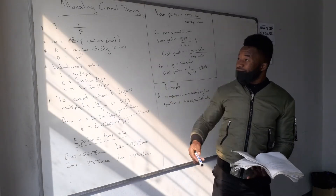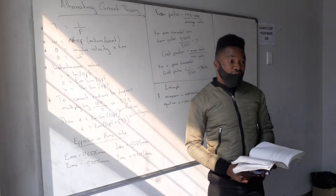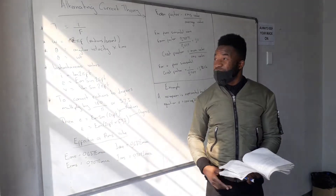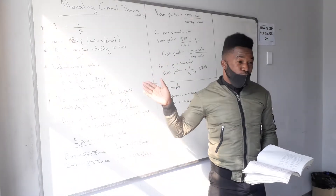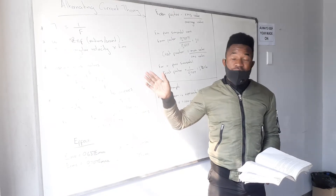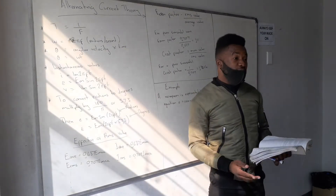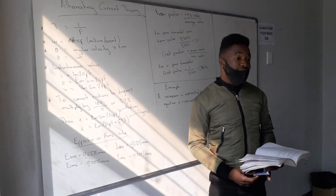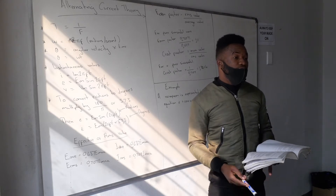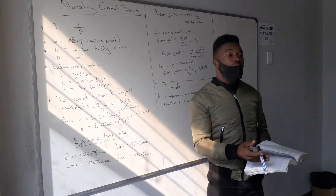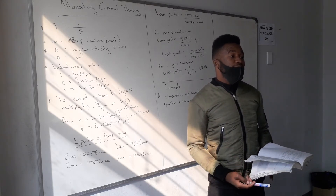The first formula: T equals 1 over F, which means time equals 1 over frequency. Remember, frequency is measured in hertz. So if you want to calculate time, you use 1 over F, whereby your frequency must be in hertz.